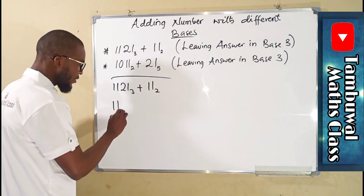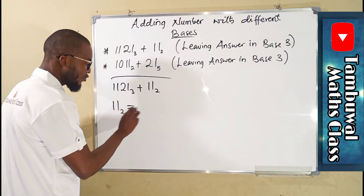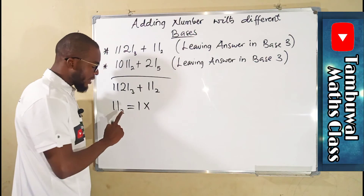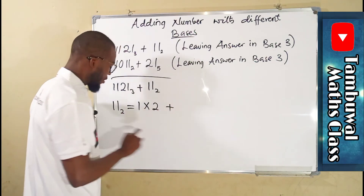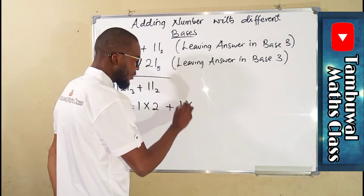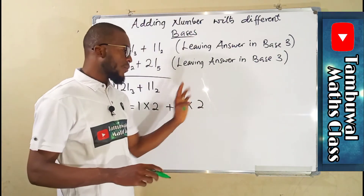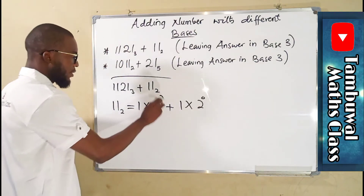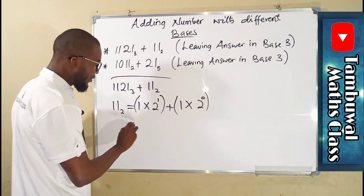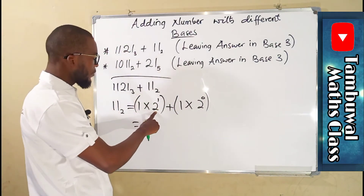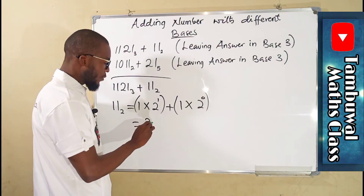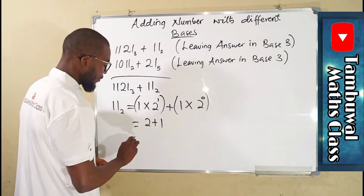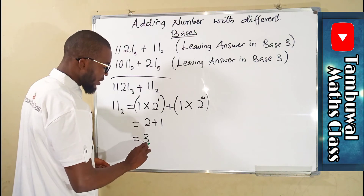So we have 11 base 2 and we want to transform it into a base 10 number. We take the first digit 1, multiply by the base which is 2, then add the second digit 1, multiply by the base. We assign our index from right to left starting from 0. So 2 to the power 1 is 2, times 1 is 2. Plus 2 to the power 0 is 1, times 1 is 1. And finally our answer is equal to 3 in base 10.